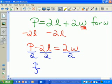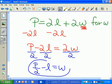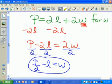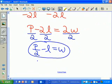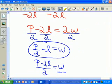So P over 2, or one-half P, minus L equals W. We also could have written this as P minus 2L over 2, which would be the same thing.